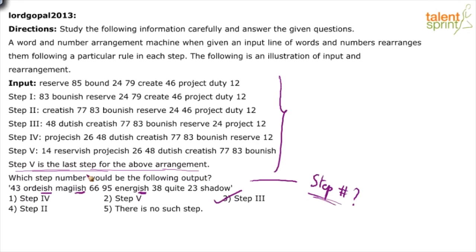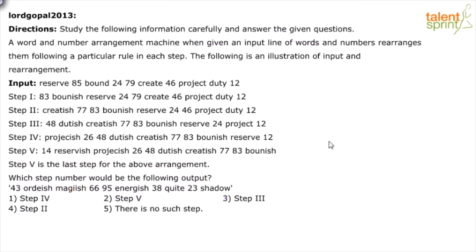There's another way using numbers: in the step shown, 38 and 23 are out of sequence while 43, 66, 95 are in ascending order as desired. Three numbers are in ascending order, suggesting it is step 3. However there is a risk — a number could already be in its correct position naturally. The easier and safer method is to count the 'ish' words.